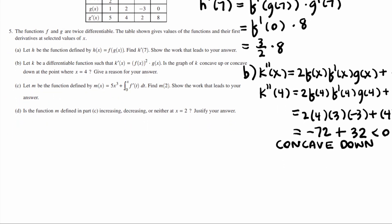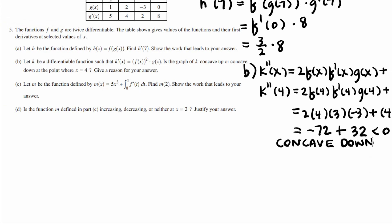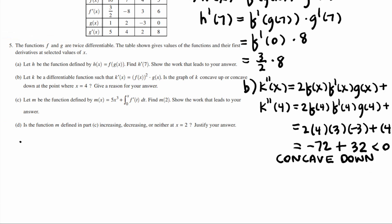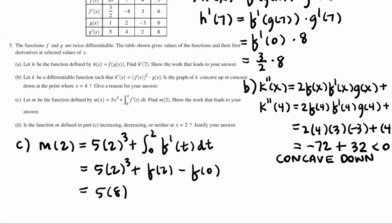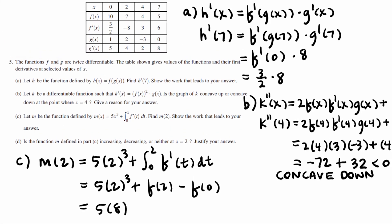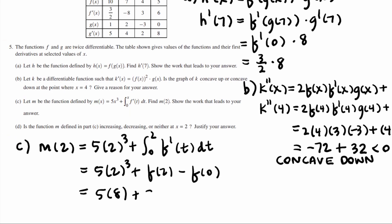c is going to be something defined by an integral. All right, well, we can do this. Find m of 2. This was not as difficult as it looked. So m of 2 is going to equal 5 times 2 to the 3rd plus the integral from 0 to 2 of f prime of t dt. So I'm just going to leave 5 times 2 to the 3rd the way it is. And then f prime of t dt's antiderivative would be f of t. So this is going to be f of 2 minus f of 0. So maybe I'll take a risk and say that 2 to the 3rd is 8. f of 2 minus f of 0 is going to be 7 minus 10. So plus 7 minus 10. And that'll be enough for part c.